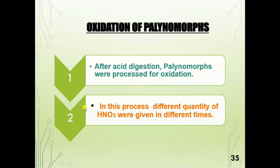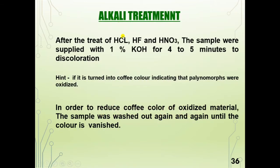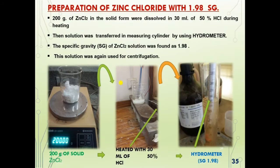For oxidation of palynomorphs, alkali treatment was done using 1% potassium hydroxide. A hint: if the sample turned coffee-colored, it indicated that palynomorphs were oxidized; this coffee color was then washed with distilled water. We used zinc chloride solution with a specific gravity of 1.98, maintained by heating, to which we added 30 ml of 50% hydrochloric acid. Specific gravity was measured by hydrometer at 1.98, and this solution was used for centrifugation.